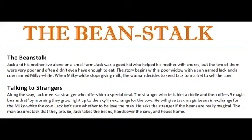Along the way, while going to the market, Jack meets a stranger who offers him a special deal. The stranger was an old man who dressed up very strangely. He had a long beard, big eyes, a straight mustache, and long hair — he was looking just like a wizard.